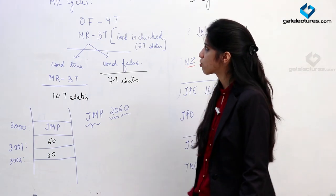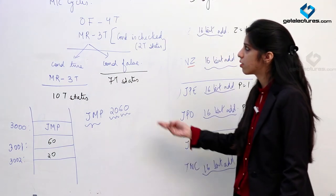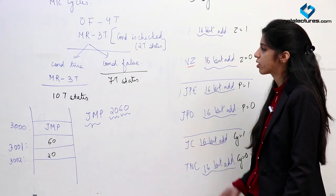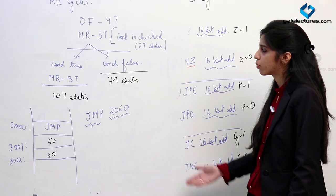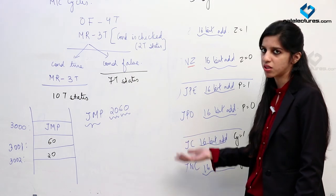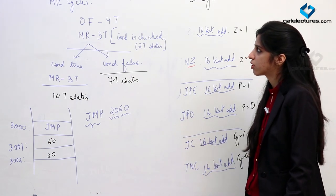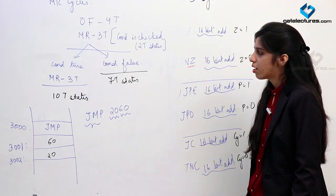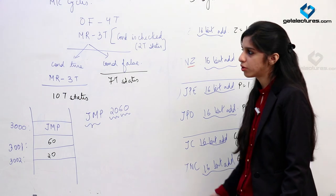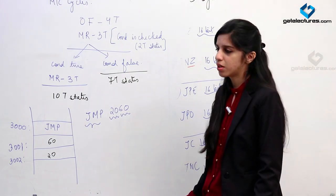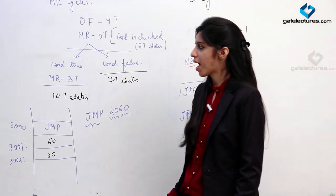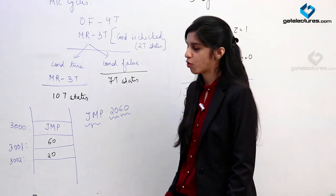To summarize: for conditional jump, machine cycles take 7 T-states if the condition is false and 10 T-states if the condition is true. Now we are going to look at some looping and timing delay modules.